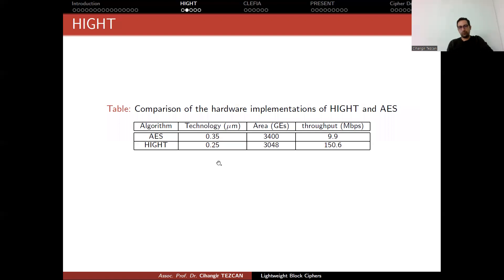But before moving on to the picture, here is a table from the original paper when they propose HIGHT. Here they are trying to show that they require less area than AES but their throughput is better. So this is why they are proposing that their cipher is as secure as AES but faster than that and requires less hardware footprint. But again, comparing these results using different technologies is not easy. So this comparison might not be fair.